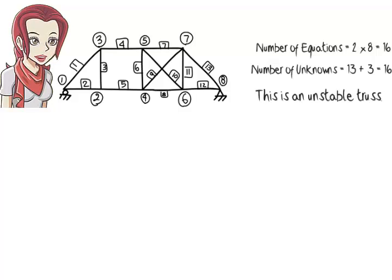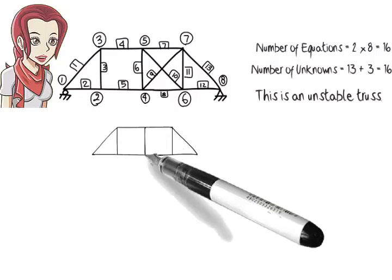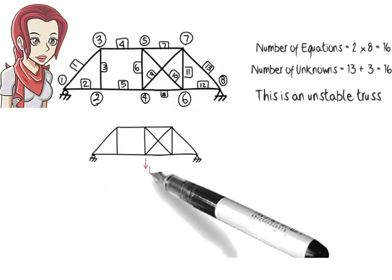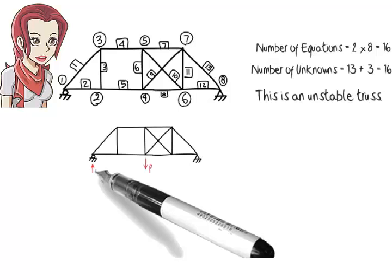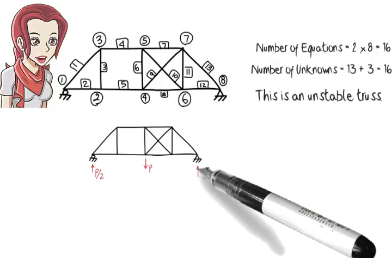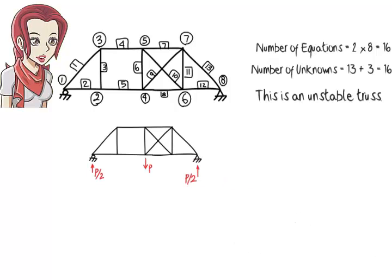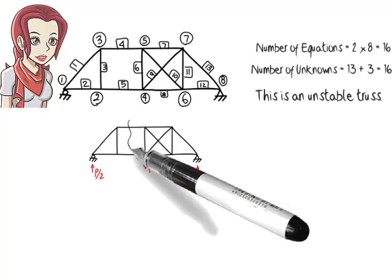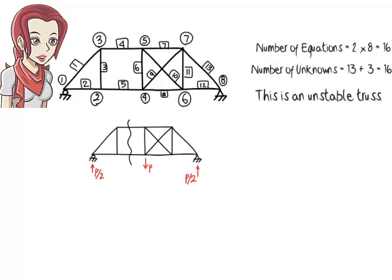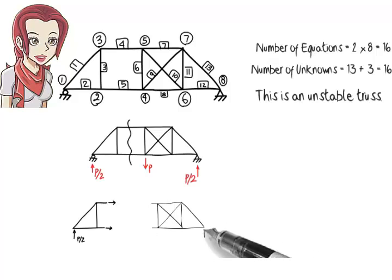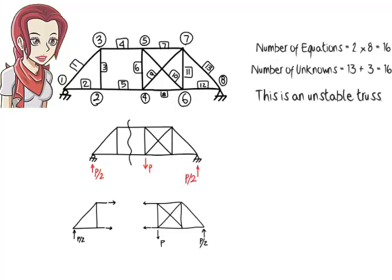How? Suppose we place a non-zero downward load of P at the midpoint of the bottom chord of the truss. This makes the vertical reaction at the left and the right ends of the truss equal P over two. Now suppose we conceptually cut the truss along a vertical plane as shown. Then, we draw the free body diagram of each segment. We know that for the structure to be in equilibrium, the equilibrium equations must be satisfied for each segment.